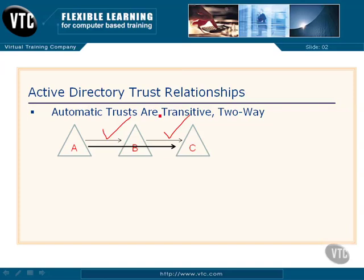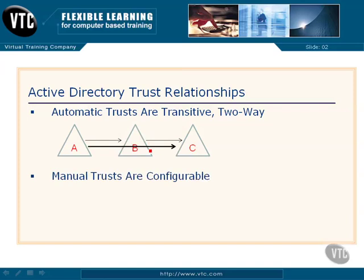And these trusts are also two-way. I could have put double heads on these arrows, because these are two-way trusts. A trusts B and B trusts A; B trusts C and C trusts B. So, the automatic trusts are always transitive and two-way.